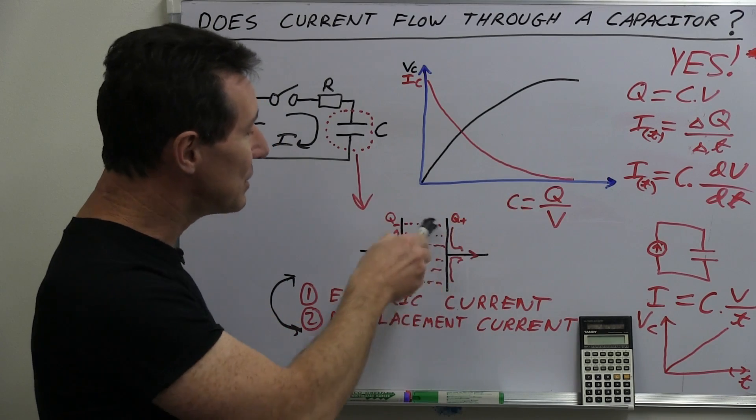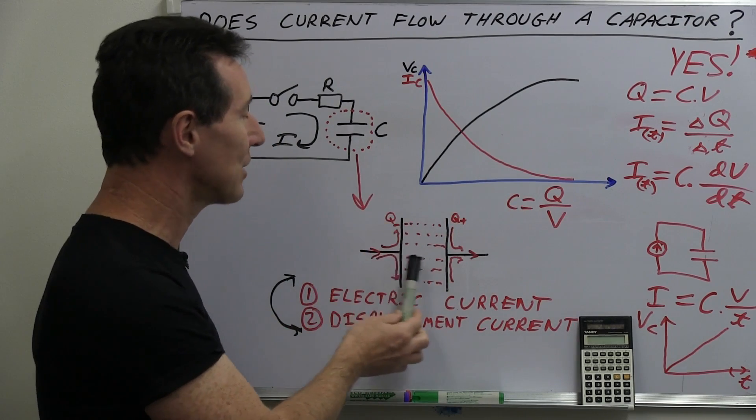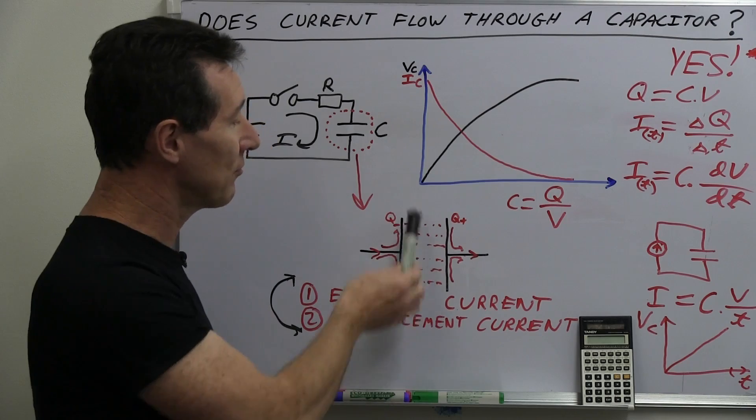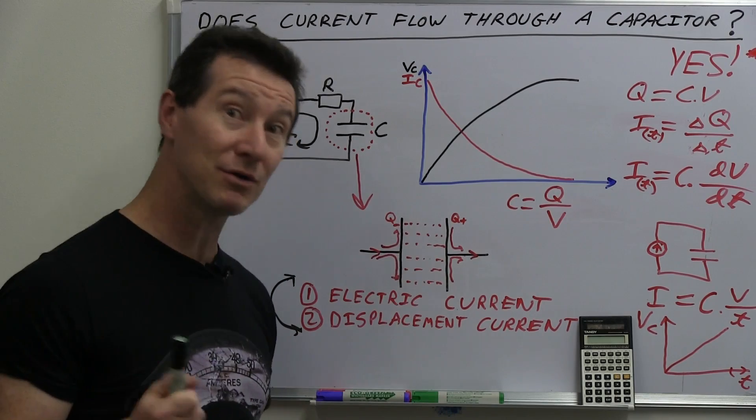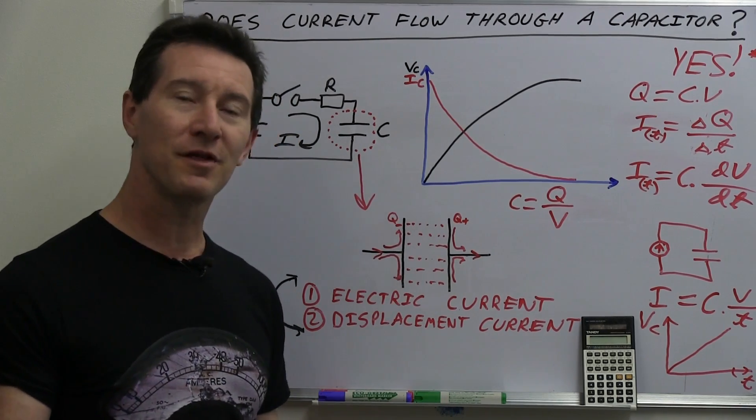But so, you know, you can go deep into the concept of how you're actually able to get current flowing through the insulator. But it does because Maxwell's equations tell you it does.